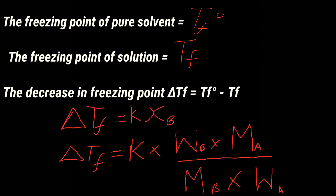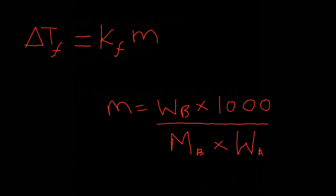Delta T_f equals k times w_b times M_a divided by M_b times w_a. Therefore, delta T_f equals K_f times m, where molality equals w_b times 1000 divided by M_b times w_a.